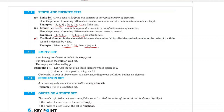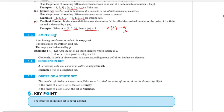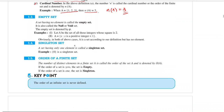An empty set is one in which there is not even a single element. Its second name is null set or void set. Its symbol is phi — a Greek letter you have seen in trigonometry.